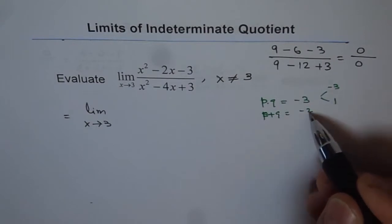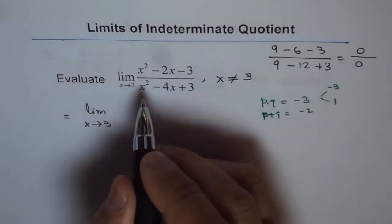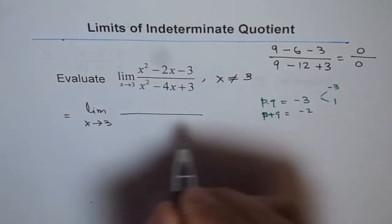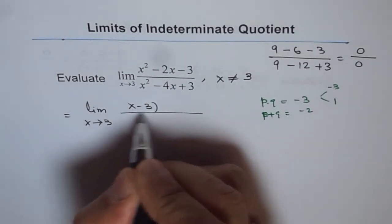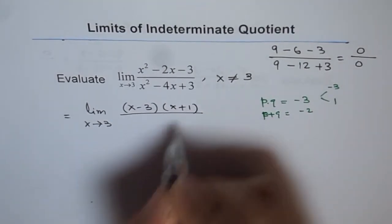So if you add minus 3 and plus 1, you get minus 2. So we can factor the numerator as x minus 3 times x plus 1.